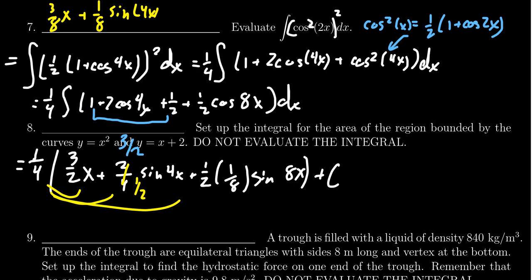And then lastly, we distribute the one fourth onto this one over here. We already have a one half times one eighth, which is one sixteenth, times that by another one fourth. It's going to give you a one sixty fourth sine of 8x. Maybe we should have made that line a little bit longer. And then finally, don't forget your plus a constant.